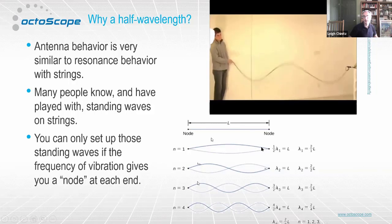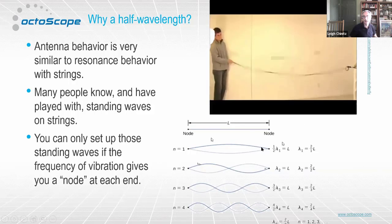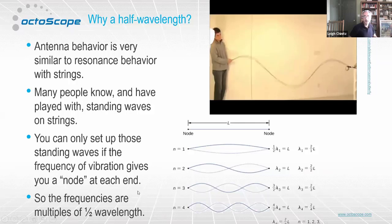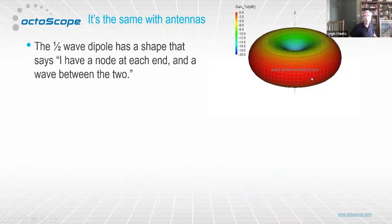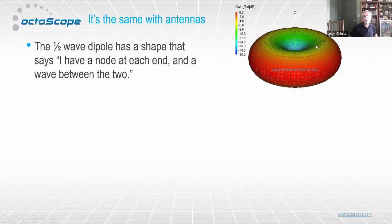You can do this for any multiple of half wavelengths — two half wavelengths, three, and so on. The frequencies you'll get are multiples of half wavelengths, and it's pretty much the same with antennas. The half-wave dipole has this toroid donut shape — it's kind of fixed at the top and bottom, with a peak out towards the sides. It has a node at each end and a wave between the two. You can use different-length antennas — for example, a one-and-a-half wave dipole would have four nodes and produce a different radiation pattern, with two big lobes and two nulls in the middle.